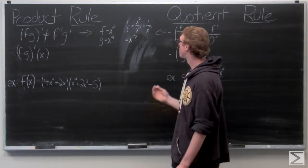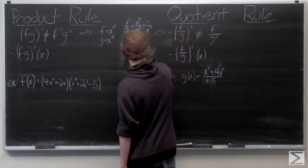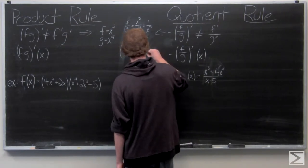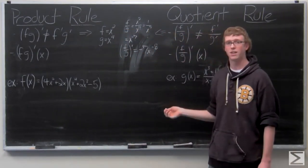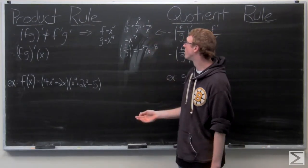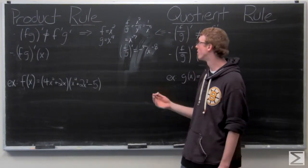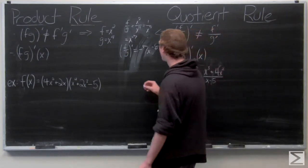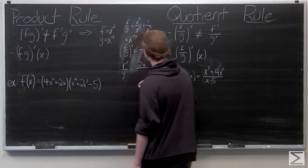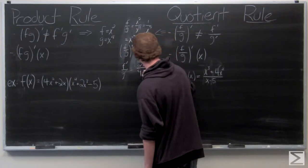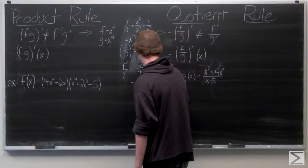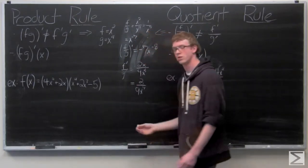Using the power rule, we get negative 7x to the negative eighth as the derivative. But if we take f prime over g prime as that derivative, we have 2x over 9x to the eighth, which is 2 over 9x to the seventh.